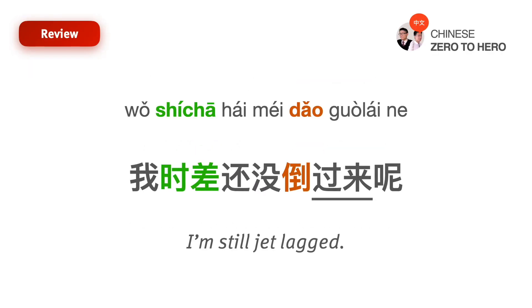And that's it. In this video, we learned how to entangle this sentence: 我时差还没倒过来呢 — it means I'm still jet lagged. If you're enjoying this, please give it a thumbs up, and let me know your thoughts in the comments below. I'll see you in the next video. Bye.